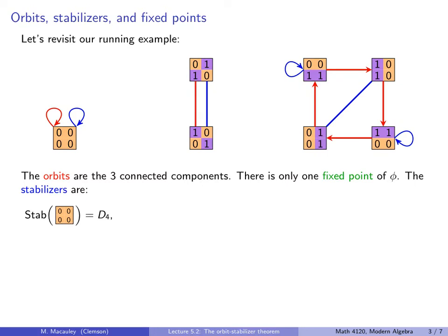There is only one fixed point of phi — that's the square with all zeros. And the stabilizers of this action, let's go through them one by one. The stabilizer of the 0000 square is D4, because every element in D4 fixes it.